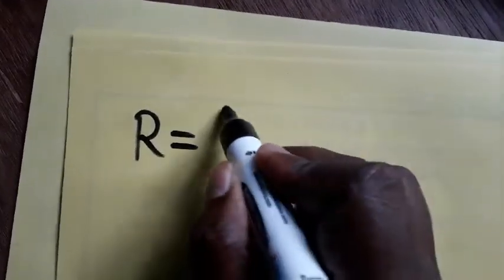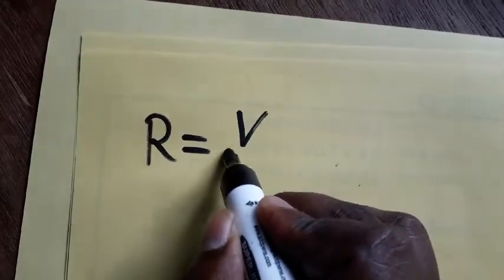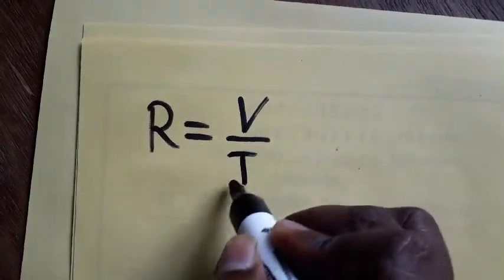Hello friends, today I am going to show you how to find the resistance SI unit and dimensional formula. According to Ohm's law, resistance is equal to V by I.